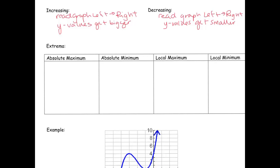Now, because we're reading the graph from left to right, the way that we write an increasing interval is using its x values. So use the x values when you write your answer down. And same thing for decreasing, we're going to use the x values.